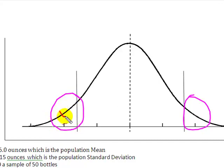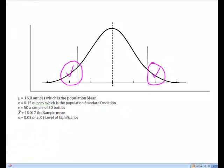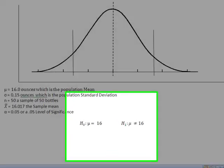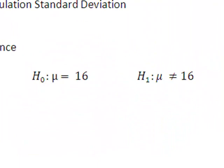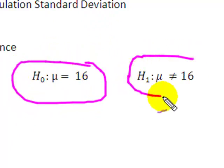So a two-tailed test, we're going to be looking for areas here and here. The other thing that we know is that our two-tailed test is going to be set H sub 0 equal to, H sub 1 not equal to. Or null hypothesis will be equal to, alternative hypothesis will be not equal to.